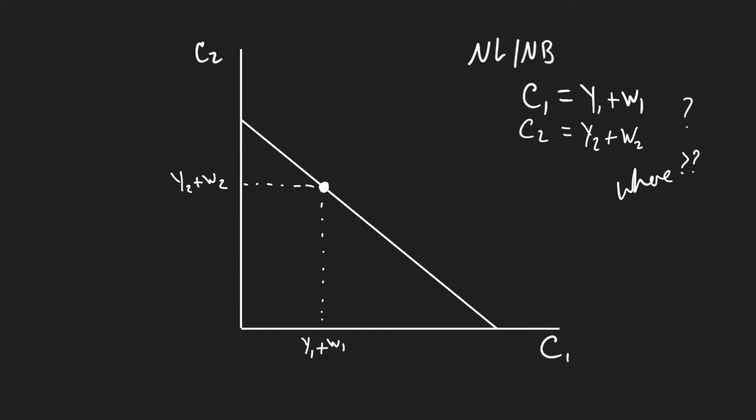I'm not borrowing, nor am I saving. So we're going to label this as my no lending, no borrowing point. So why is this important? Well, it tells us whether or not this economic agent is a borrower or a saver.